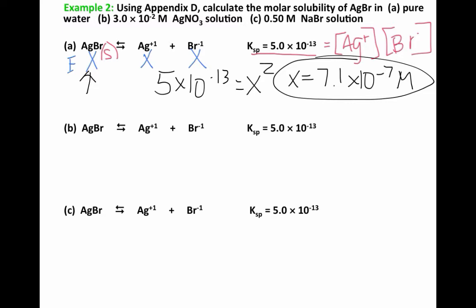For part B, we're putting silver bromide into a 0.030 molar silver nitrate solution. At equilibrium, we have X moles per liter of silver bromide, but silver nitrate is a completely soluble salt, so in solution we have Ag+ plus NO3-. Notice this is a common ion. So we have 0.030 — that's 3.0 times 10 to the negative 2nd — plus X for Ag+, and just X for Br-. This 0.030 is a common ion, like we did the common ion effect before.